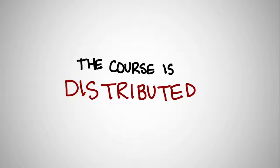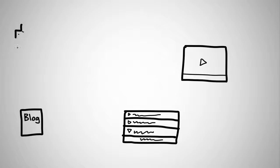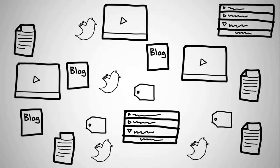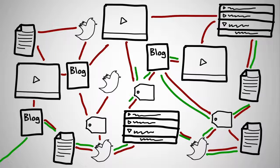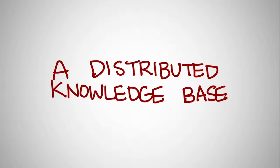The course is distributed. Blog posts, discussion posts, video responses, articles, tweets, and tags all knit together to create a networked course. They're mostly not found in one central location, but rather all over the internet in different pockets and clusters. There's no right way to do the course, no single path from the first week to the last. This allows for new ideas to develop and for different points of view to coexist. One side effect of a MOOC is the building of a distributed knowledge base on the net.